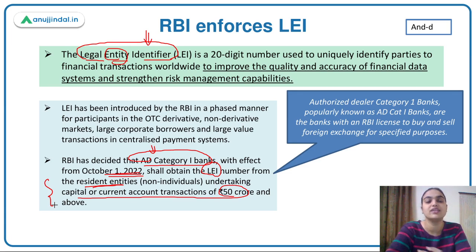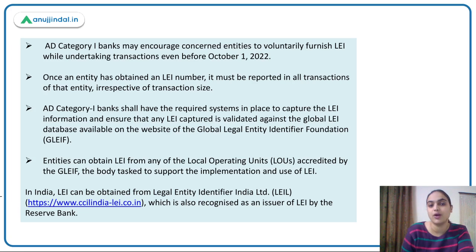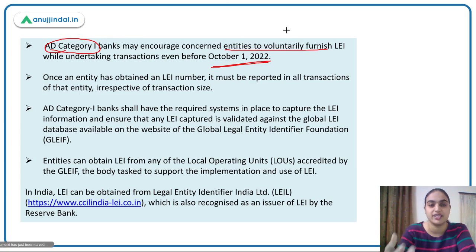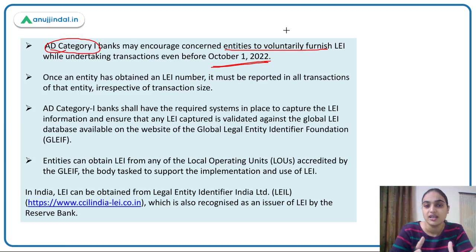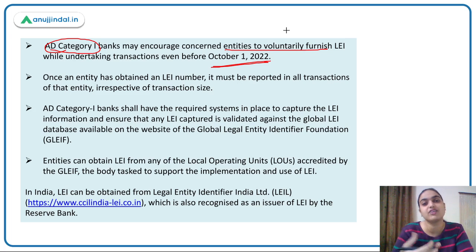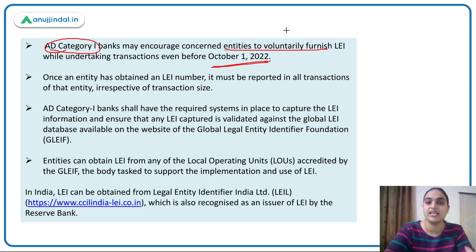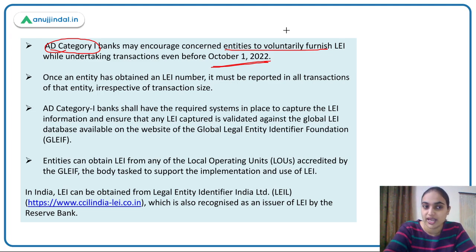The LEI number details of the entity need to be fetched by Authorized Dealer banks when transactions involve 50 crore or more. Additionally, these AD Category 1 banks may encourage entities to voluntarily furnish their LEI even before October 2022. Banks need to encourage resident entities undertaking large transactions to obtain their LEI numbers as soon as possible if they have not done so.